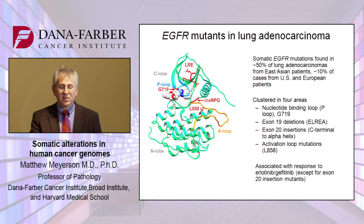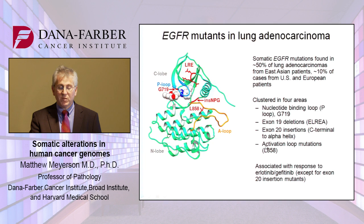The extracellular domain would be up here, and the C-terminal domain would be down here. Mutations in lung cancers are concentrated in the kinase domain. In glioblastoma, in contrast, they're concentrated outside the kinase domain. We see mutations in the nucleotide binding loop, deletions amino terminal to this alpha helix, insertions carboxyl terminal to this alpha helix, and in the activation loop shown here. All four of these mutation types, with the exception of the exon 20 insertion mutants, are associated with response to erlotinib, gefitinib, and newer agents such as afatinib.